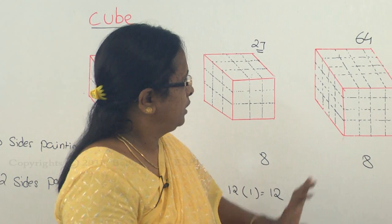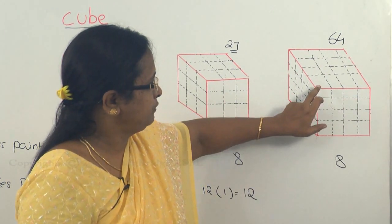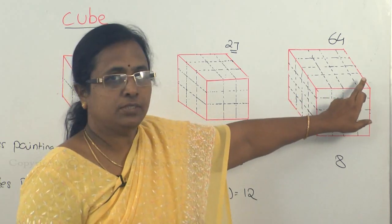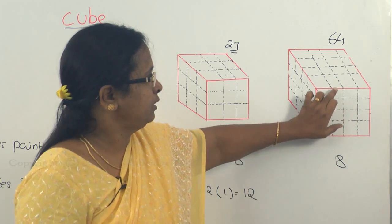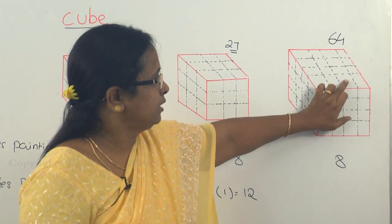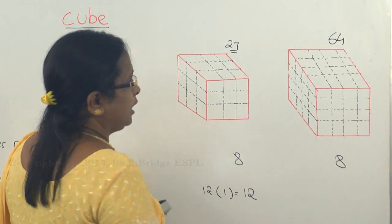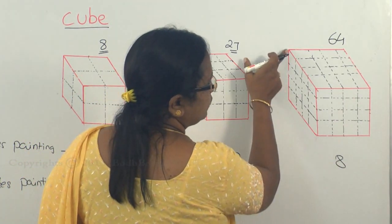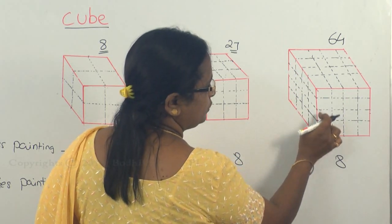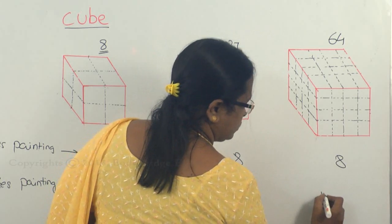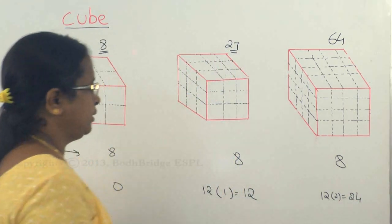For the third cube case with 64 smaller cubes, again at each edge you take the edge and the two corner cubes at each end are removed. The remaining you have only two of them which are two-sided painted. So for each of the twelve edges you are going to have two cubes which are two-sided painted. So this is going to be twelve into two, which is twenty-four two-sided painted cubes.